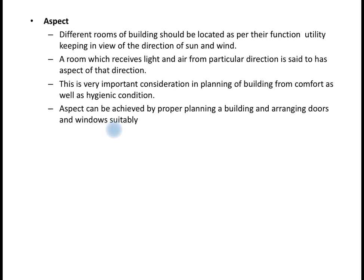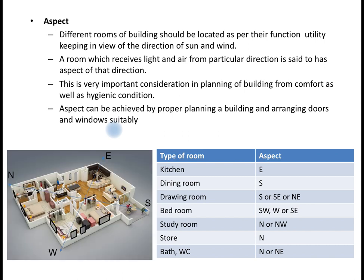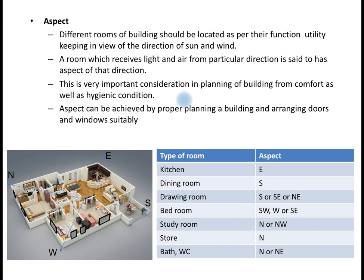While planning the building, we may have to make adjustments and evaluate which aspects we can compromise and which we must stick with — all depends on the people who are going to construct that building. The first parameter is aspect. Aspect is a parameter that describes the direction — which kinds of rooms should be located as per their function, keeping in view the direction of sun and wind.